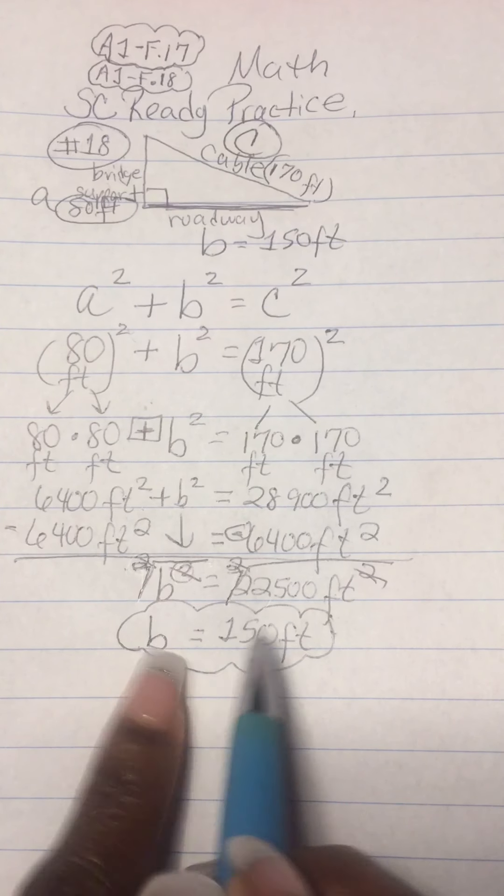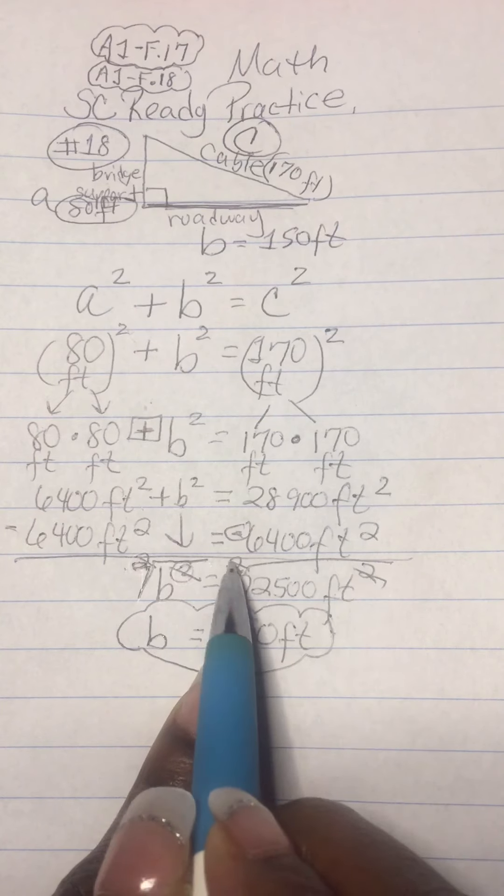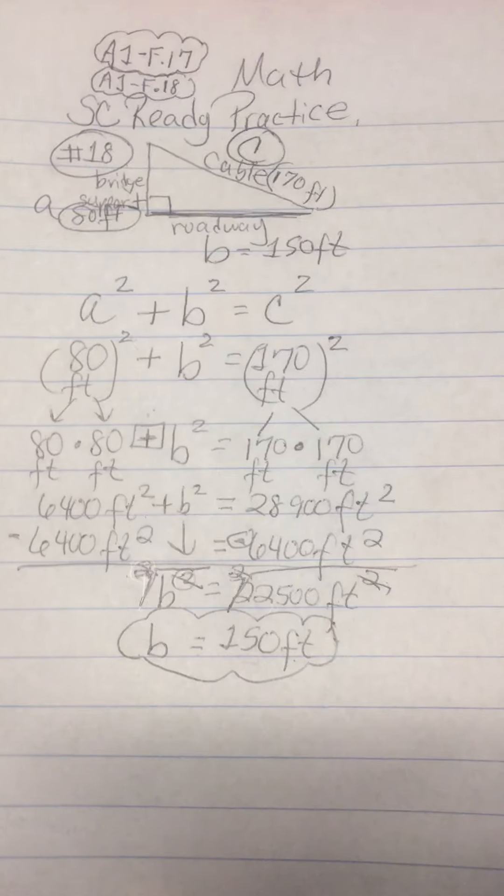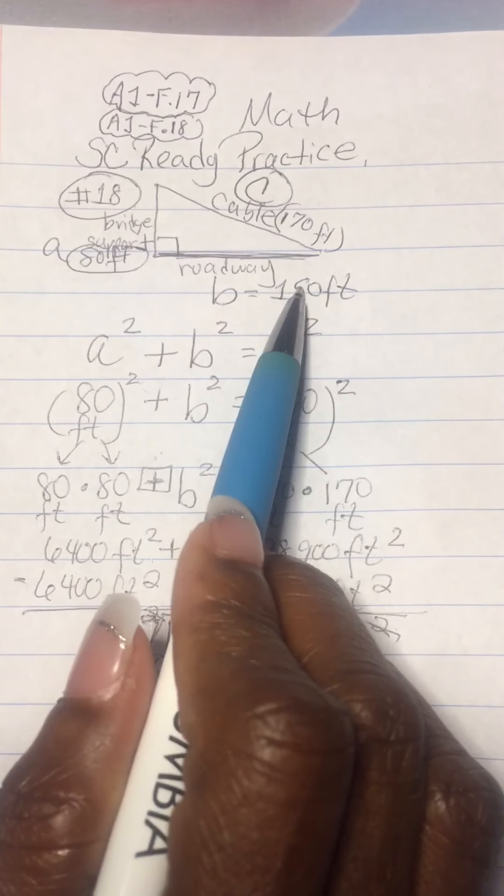So B is equal to 150. 2 divided by 2 makes it 1, so we have 150 feet. So then I went back to the top. B is equal to 150.